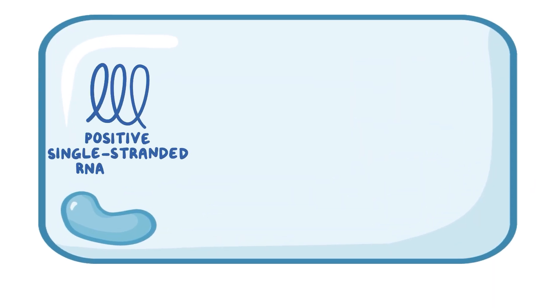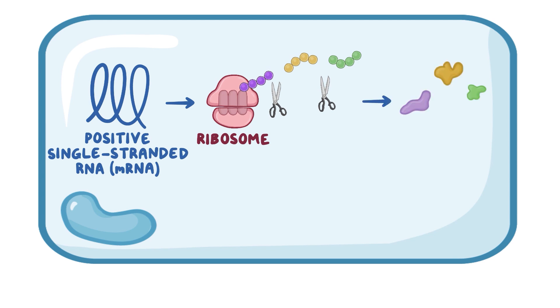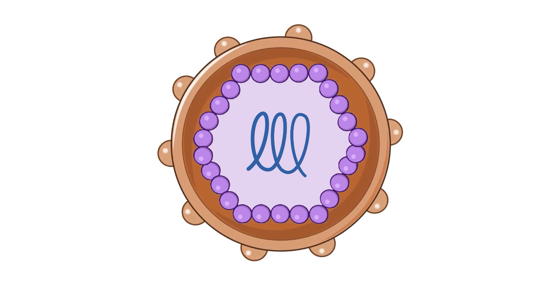West Nile virus is composed of positive, single-stranded RNA. This means that their RNA is actually mRNA, and the host cell ribosomes use this mRNA to make a long polyprotein chain, which is then broken into smaller pieces by viral proteases. This all happens in the cytoplasm of the host cell, since that's where ribosomes are found, and results in the production of several viral proteins. West Nile virus is surrounded by an icosahedral capsid, which is a spherical protein shell made up of 20 equilateral triangular faces. West Nile virus is also an enveloped virus, because the capsid is covered by a lipid membrane.